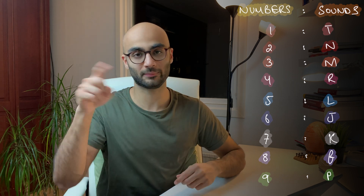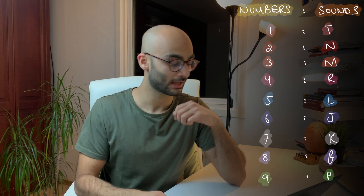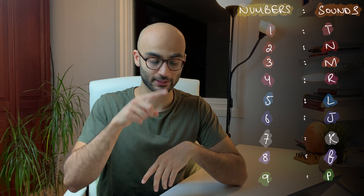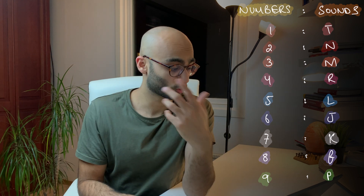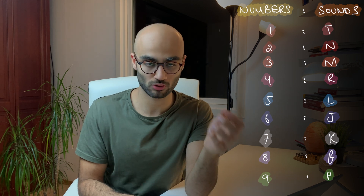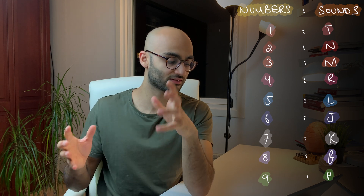Five is associated with the L sound, because in Roman numerals L means 50. Number six is associated with J, because J written backwards supposedly looks like a six. Number seven is associated with K, or a hard C sound. Number eight is linked with F, because a handwritten F has two loops, just like an eight. Number nine is associated with P, because P written backwards looks like a nine. So you are associating all these numbers with a specific sound or letter.